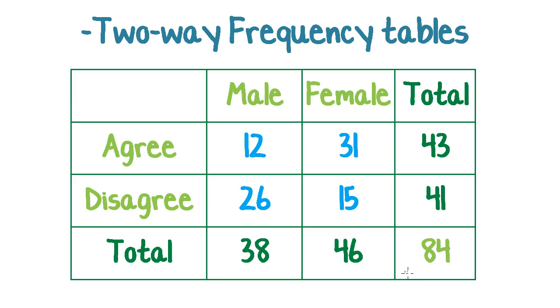So, once you've got your data presented like this, you can make some comments about what the data is telling you. So, for example, here we've got males agreeing is 12 and females agreeing is 31, so a lot more females than males agree with whatever we happen to be talking about. Similarly down here, we've got 26 males disagree and only 15 of the females disagree, so we could say a lot more males than females disagree.